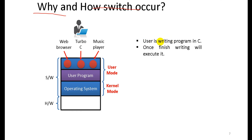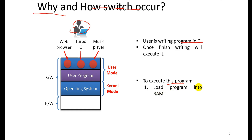Now let's look at context switching. Suppose a user is writing a program in C — that is a user program. To execute this program and see the result, the program must be loaded into RAM, which is the primary storage device. Then the program is executed by the processor.